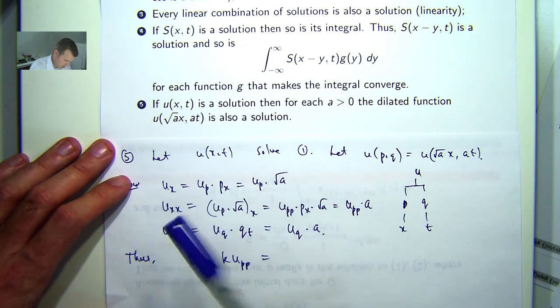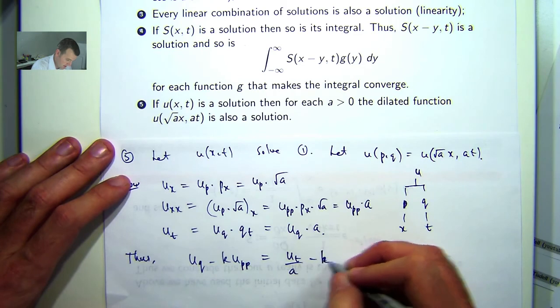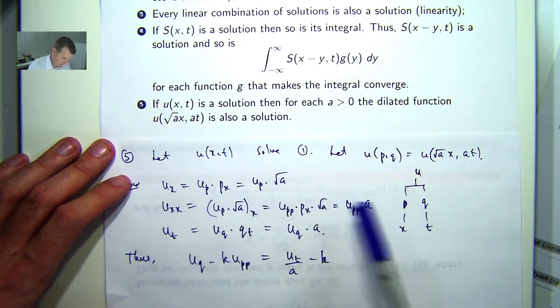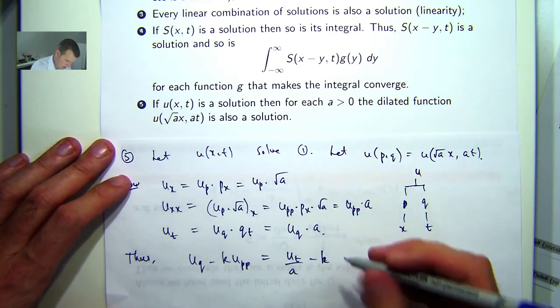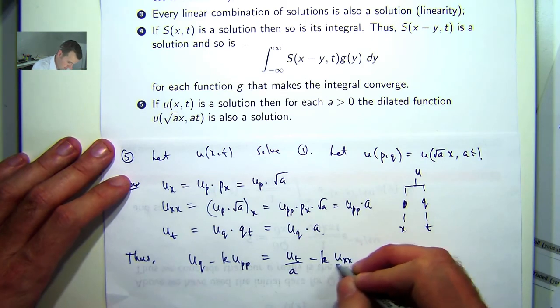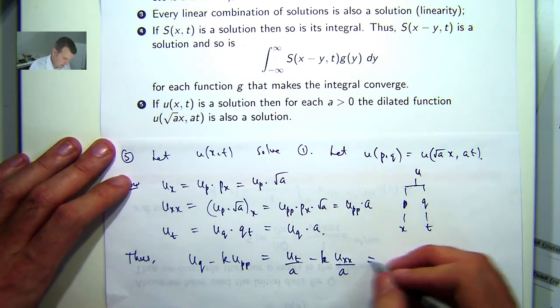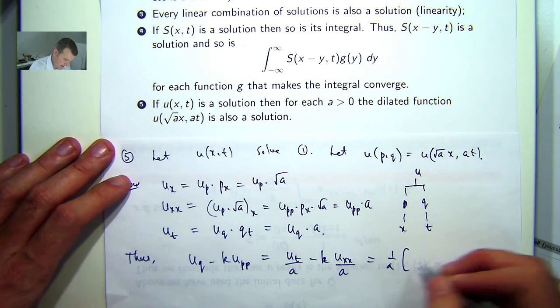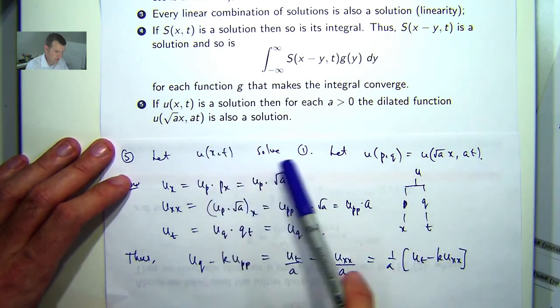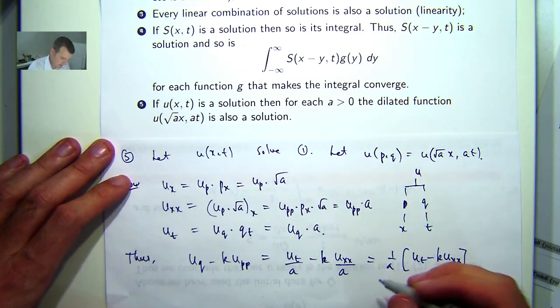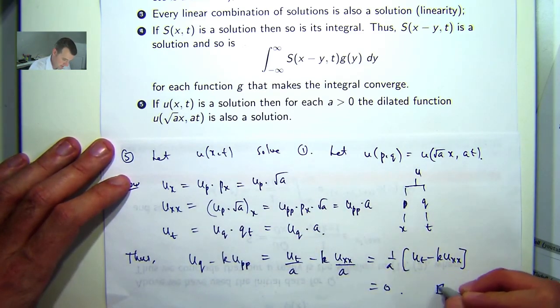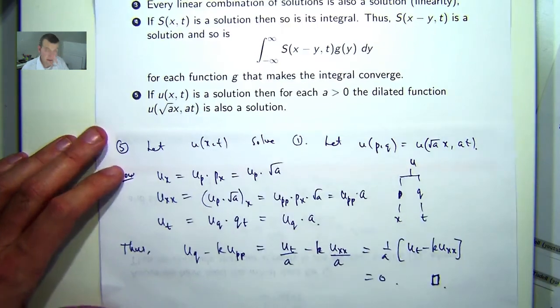u_pp is just going to be u_xx over a. So I can bring out the common factor of a. And because we've assumed this solves 1, this thing in brackets is 0.